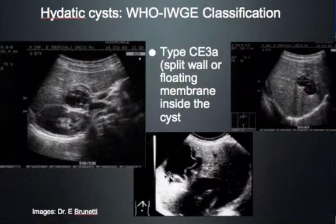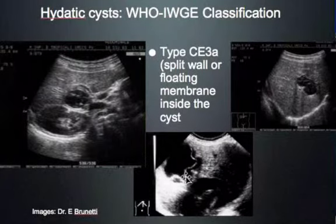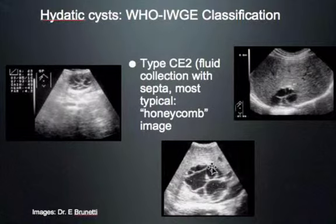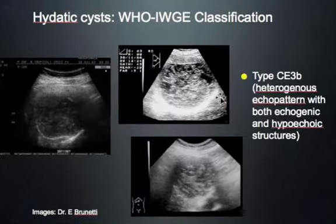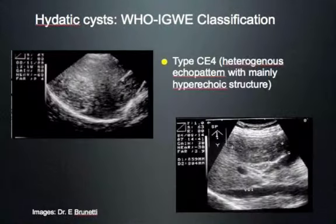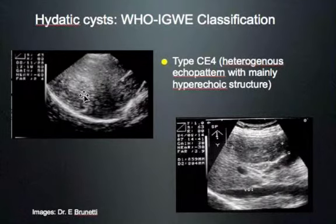CE3a: the inner cyst is detached from the outer cyst — a membrane floating inside the cyst. CE2 shows the typical honeycomb image — a fluid collection with daughter cysts. CE3b: the cystic material slowly becomes consolidated, developing a heterogeneous echo pattern with both echogenic and hypoechoic areas.